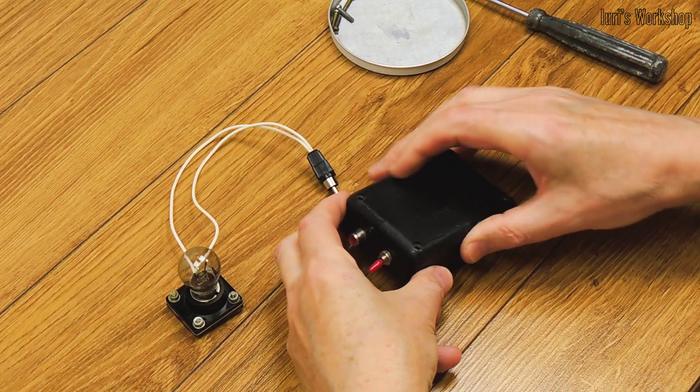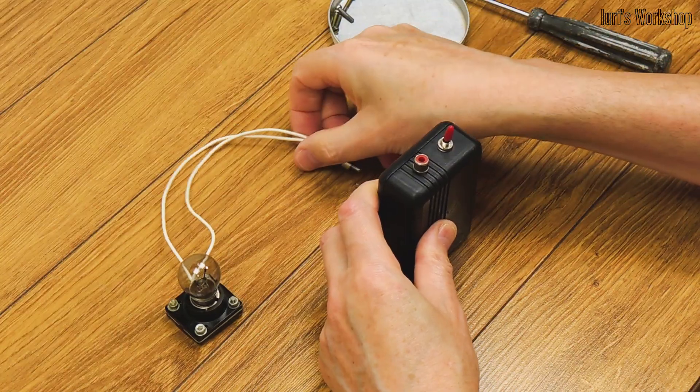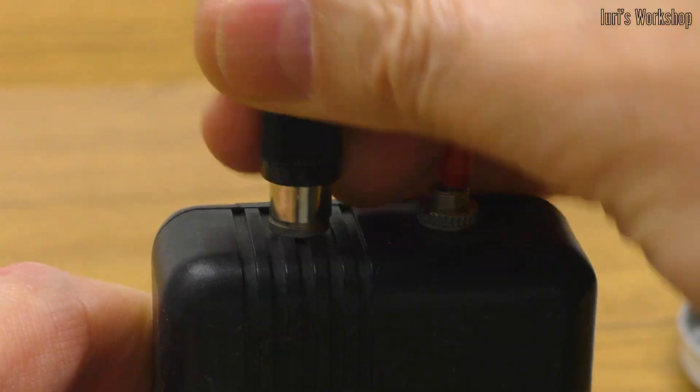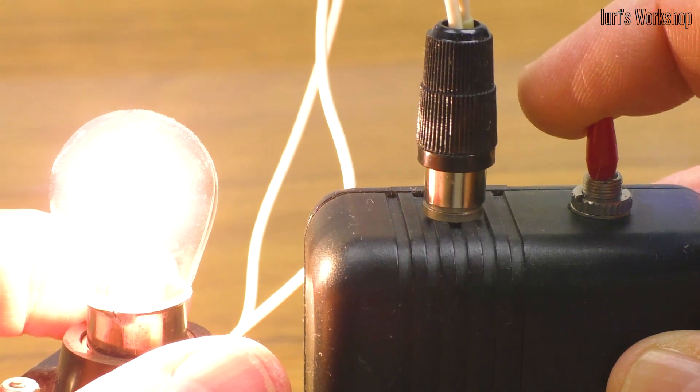And this is a simple 12-volt power supply with a 10-amp protection board. I use this source for field testing. To demonstrate its work, we can connect a car lamp to it.